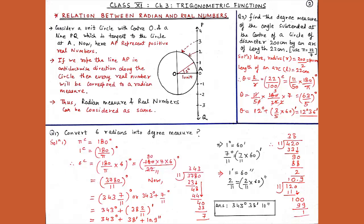We take 38 minutes and convert 2 upon 11 minutes into seconds. Since 1 minute equals 60 seconds, 2 upon 11 minutes equals 2 upon 11 into 60 seconds, giving 120 upon 11 seconds. Dividing, the quotient is 10.9, which we approximate to 11 seconds. Therefore, 6 radians equals 343 degrees, 38 minutes, and 11 seconds.